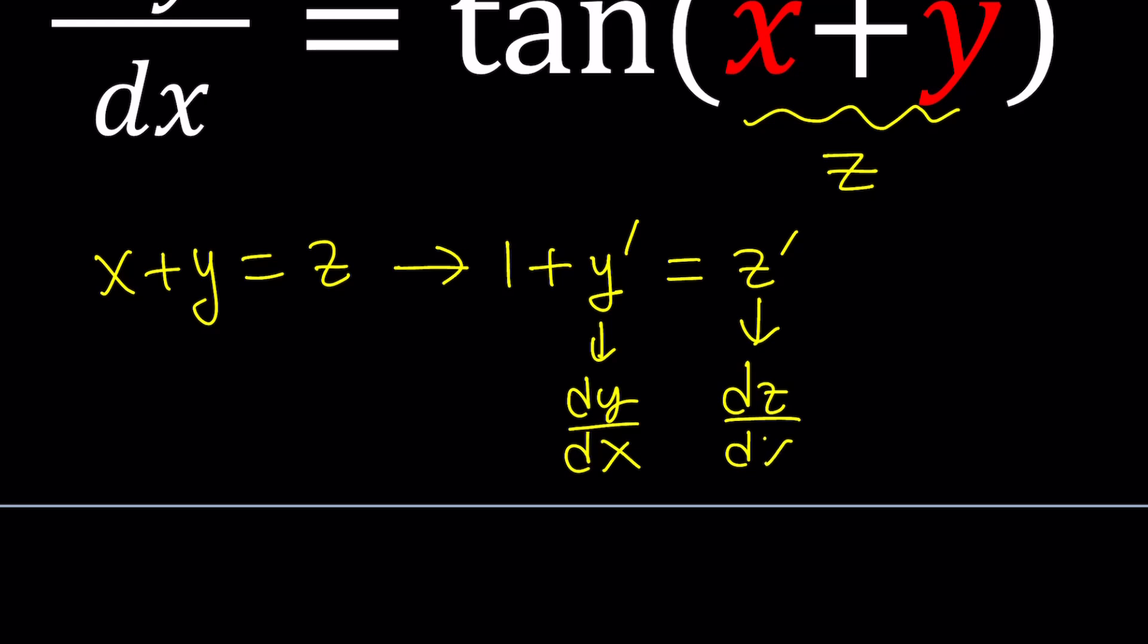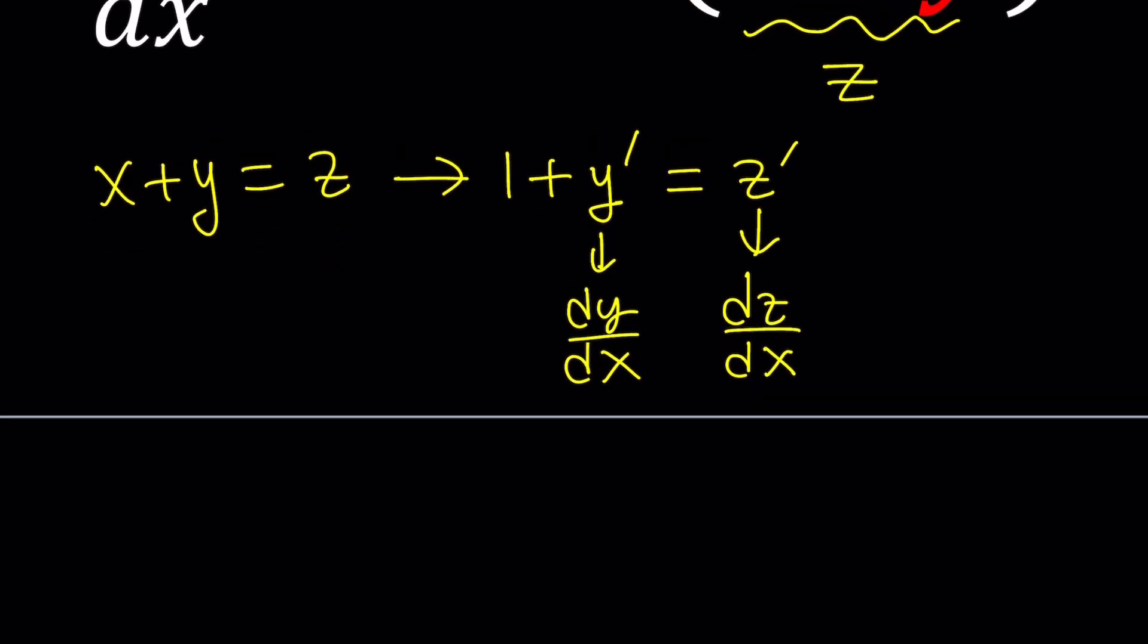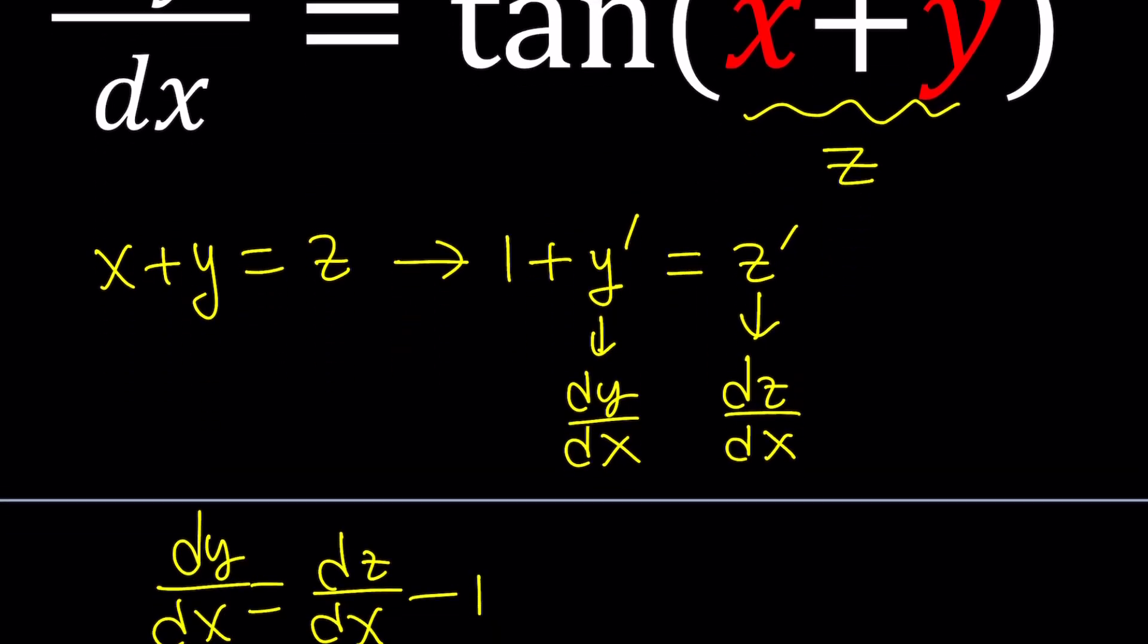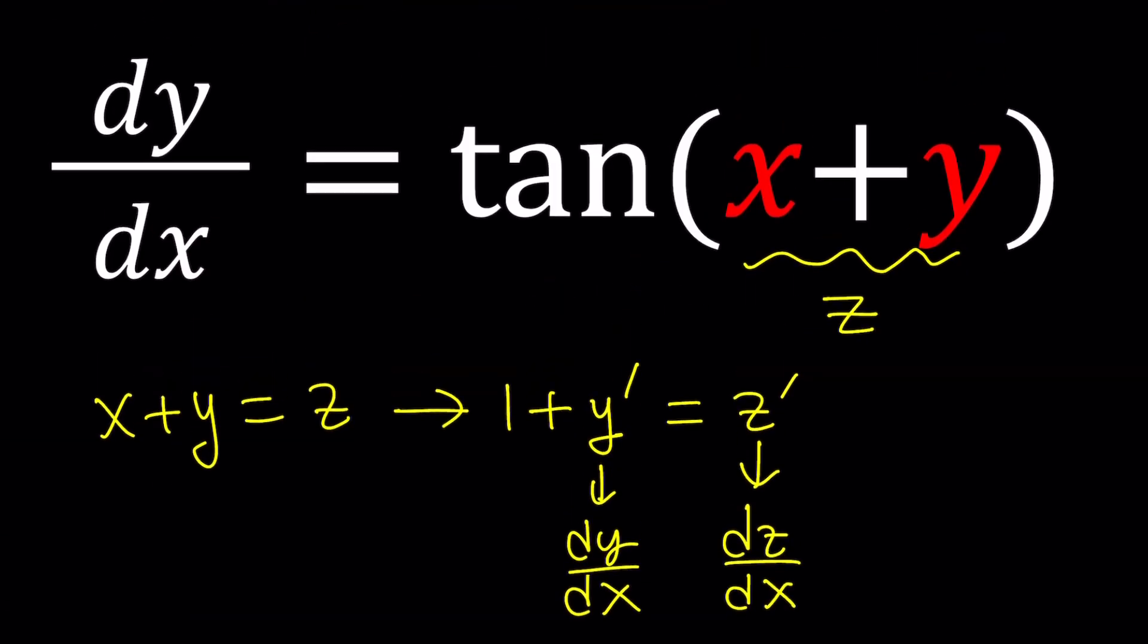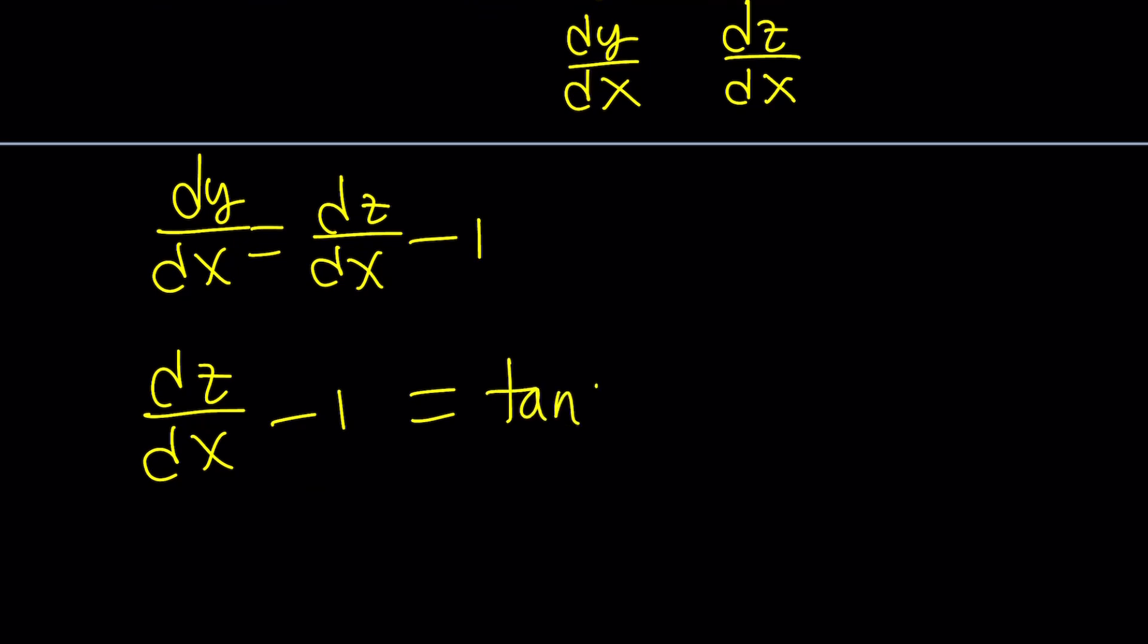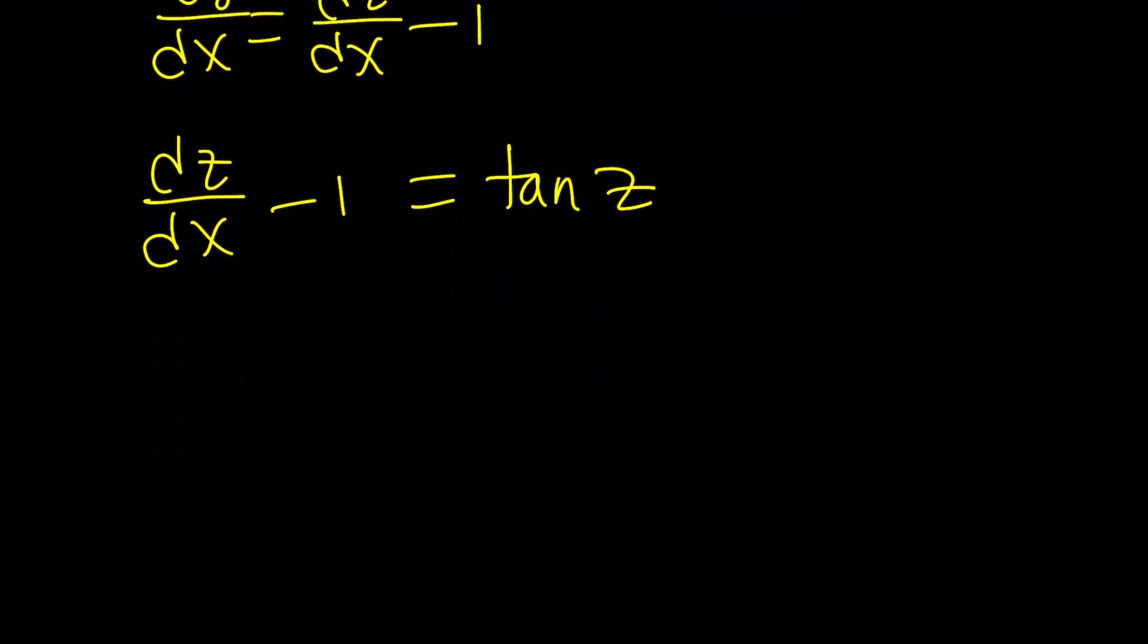So from here we can basically isolate y prime or dy over dx and write it as dz over dx minus 1. And on the right hand side we have tangent x plus y which turns into tangent z. Awesome. Now our new variable is z and notice that we don't have y anymore. Everything is in terms of z and x. Let's add one to both sides.